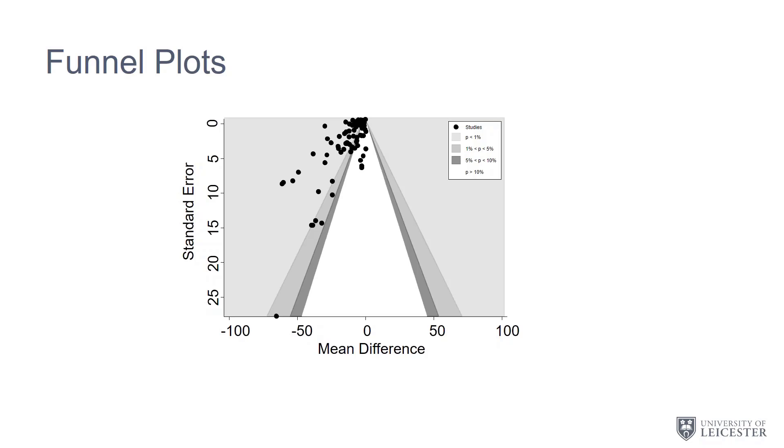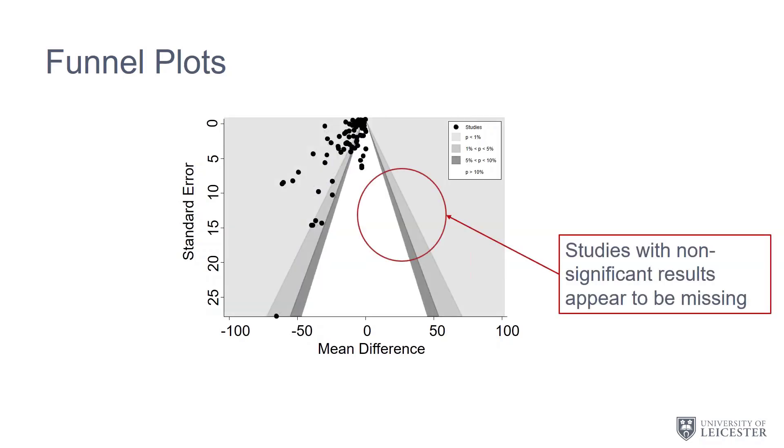When we look at the plot, what we're looking for is to identify the areas where the studies are missing. In this case, we have this area here of missing studies—potentially we're missing some studies which have a null result or potentially a negative result. This is where we see the asymmetry.